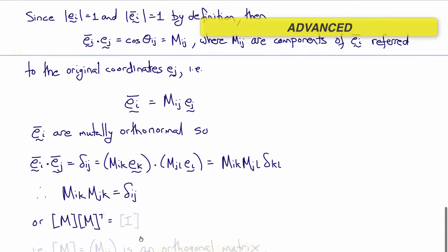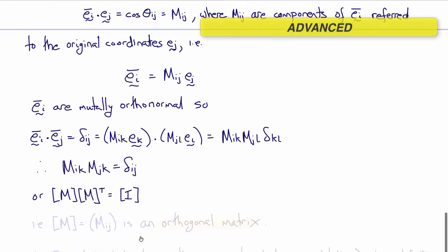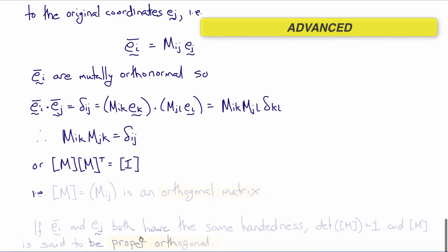Or, in matrix notation, m times m transpose equals i. In other words, m, which is the matrix of components mij, the angle cosines, is an orthogonal matrix. It's a rotation, just as we originally posited.